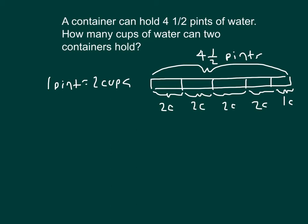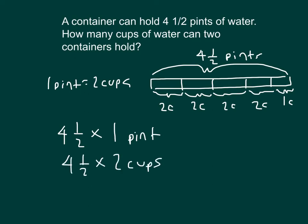Our multiplication expression to show this was four and one-half times one pint. And remember that one pint does equal two cups. Let's express four and one-half as an improper fraction. Each whole is equal to two halves, so four wholes is equal to eight halves, plus another half is equal to nine halves. So we have nine halves times two cups, and nine halves times two cups does equal nine cups.